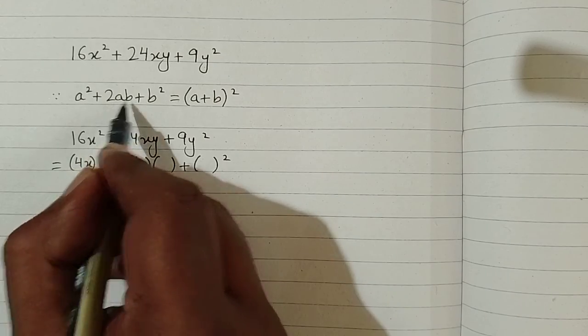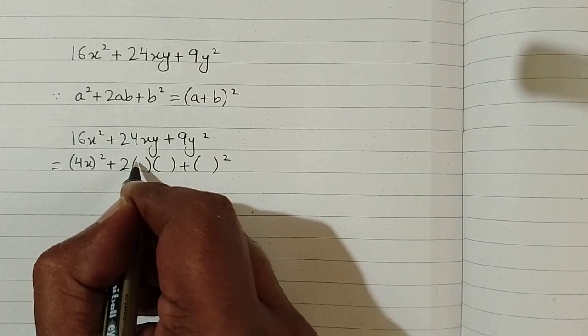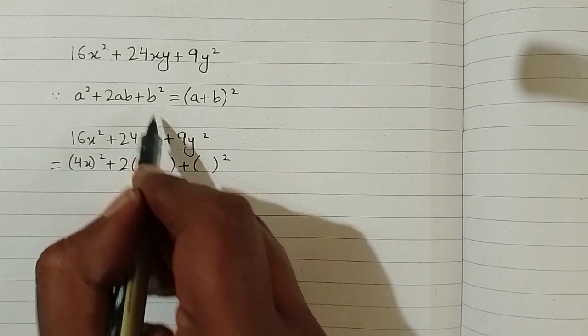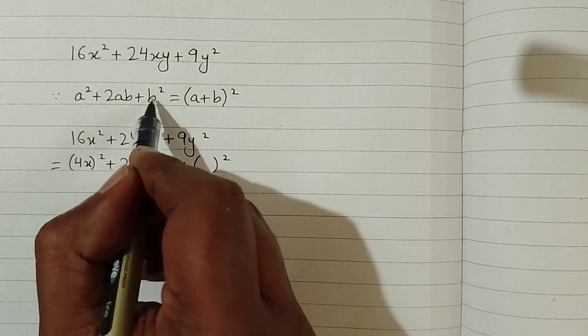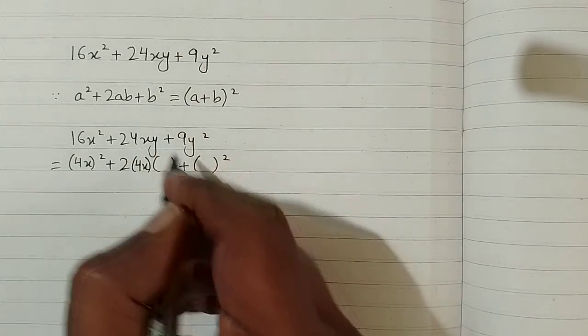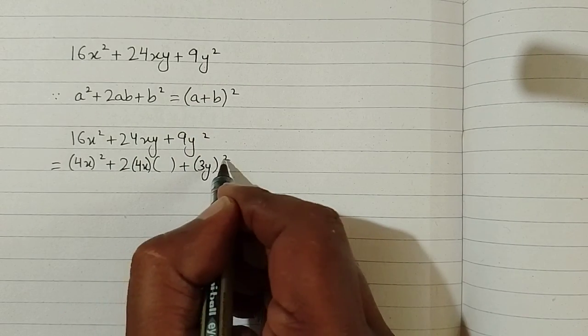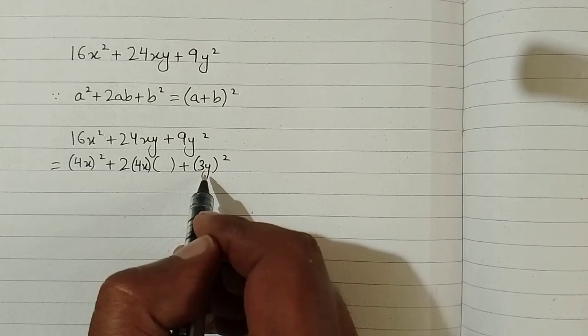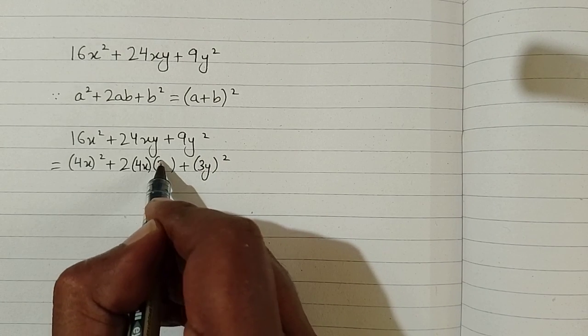Then we have 2ab, so we put the value of a here, which is 4x. And we have 9y² in place of b², so the value of b is 3y because the square of 3 is 9 and the square of y is y². We can put this value in place of b.